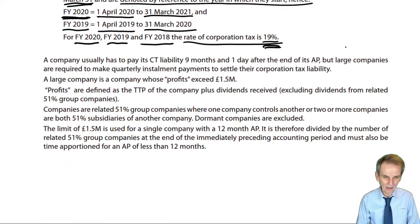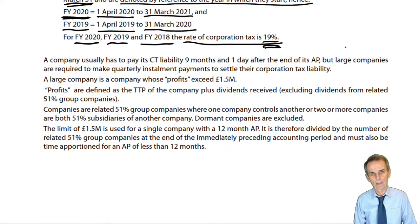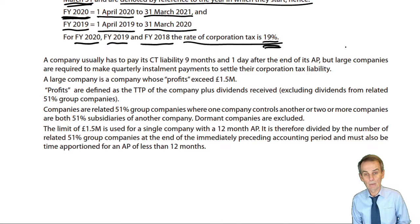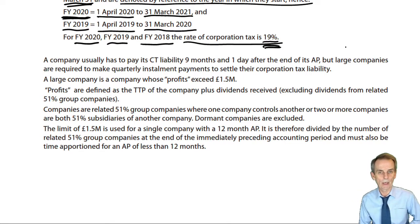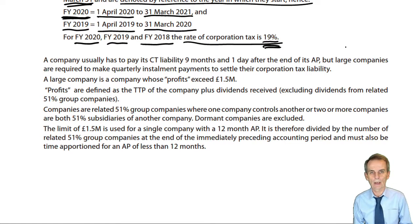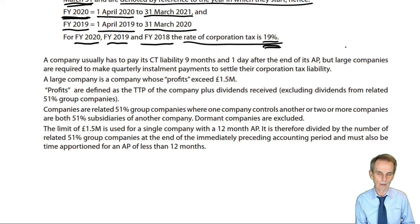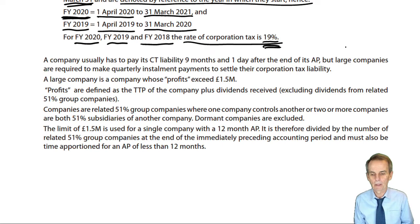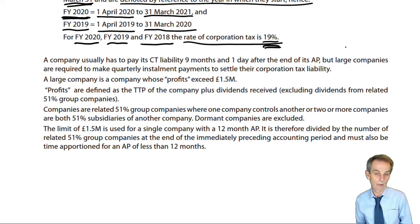Now we look at the content of the corporate tax computation - what makes up TTP. Once TTP is established, all we need to do is tax it at 19% and we have the corporation tax liability.